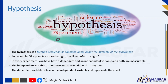In every experiment, you have both a dependent and an independent variable, and both are measurable. The independent variable is the cause and doesn't depend on anything. The dependent variable relies on the independent variable and represents the effect. In the experiment of exposing leaves to light and darkness and then testing for starch, light will be the independent variable — it is the one causing starch formation. Starch is the dependent variable; it depends on light for it to be available.